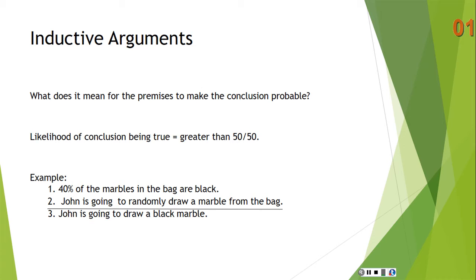Take a coin flip. If you have a fair coin, the likelihood that the coin will land on heads is 50-50, and the likelihood that it will land on tails is 50-50. That's what it means for something to have a likelihood of 50-50.